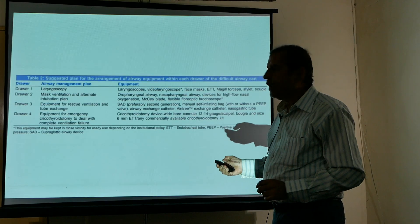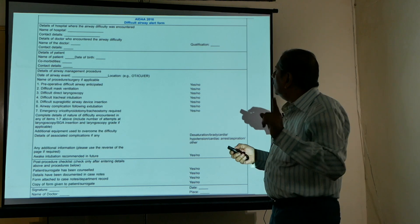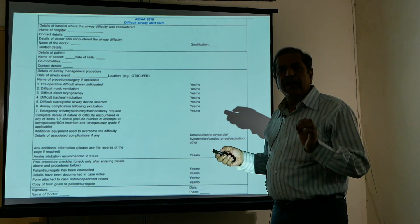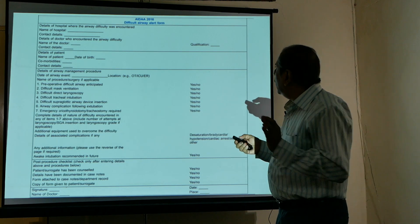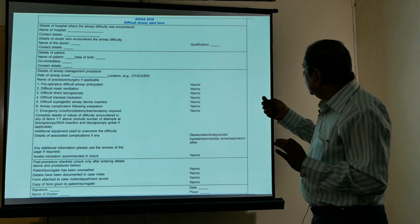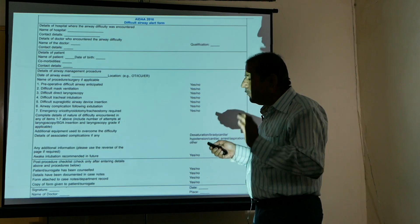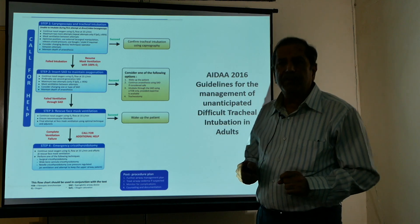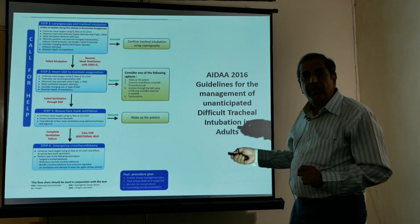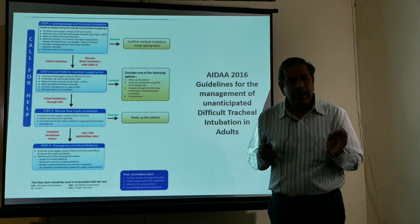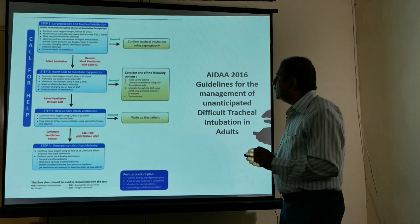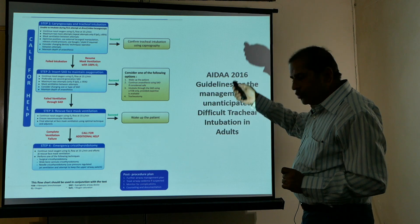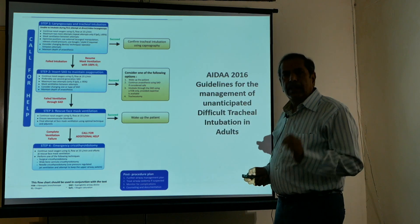There is an alert form devised by the All India Difficult Airway Association for filling when you encounter any difficult intubation or difficult airway. There is also an algorithm prepared by the All India Difficult Airway Society — a modification of the American Society of Anesthesiologists' recommendations — giving the protocol for airway management and when to trigger cricothyroidotomy.